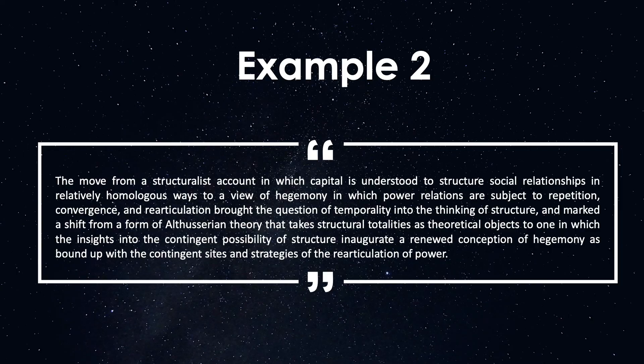The move from a structuralist account, in which capital is understood to structure social relationships in relatively homologous ways, to a view of hegemony, in which power relations are subject to repetition, convergence, and re-articulation, brought the question of temporality into the thinking of structure, and marked a shift from a form of Althusserian theory that takes structural totalities as theoretical objects to one in which the insights into the contingent possibility of structure inaugurate a renewed conception of hegemony, as bound up with the contingent sites and strategies of the re-articulation of power.